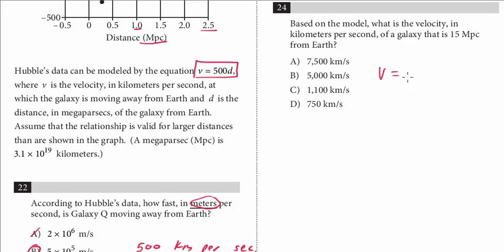We know that the velocity equals 500 times the distance. And they're giving us a new distance. D, we're told, is the distance in megaparsecs. And they're telling us it's 15. So, all this is just using the model 500 times 15. That is 7,500. The answer is A.